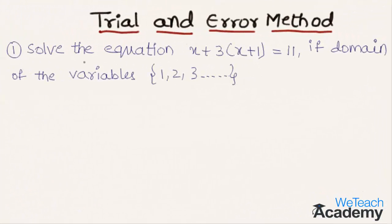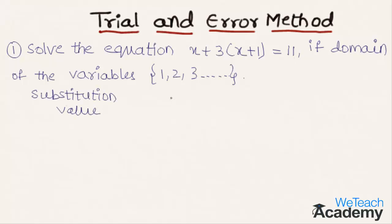Solve the equation x plus 3 into x plus 1 equal to 11, where the domain of the variable is 1, 2, 3, and so on. We will substitute the values of x and find the values of LHS and RHS so that LHS is equal to RHS.